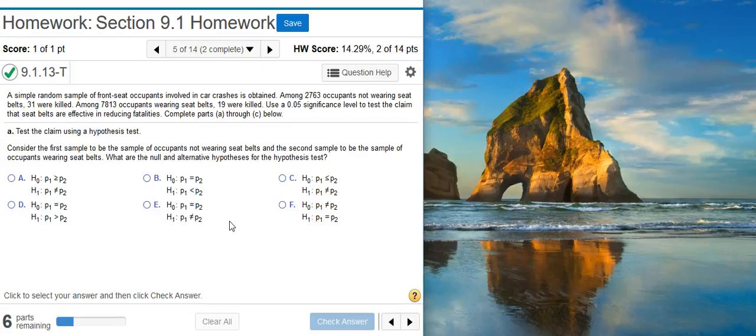By definition, the null hypothesis is always a statement of equality. So right off the bat, we know that answer options A, C, and F are incorrect. We're having to choose between answer options B, D, and E, because all of these answer options have the null hypothesis as a statement of equality. To determine the correct alternative hypothesis, we need to go and look at the claim. What is the claim that's being made?